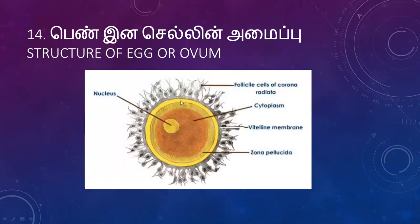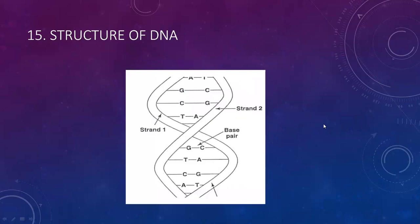Structure of egg or ovum: membranes include zona pellucida and zona — corona radiata is the external layer. The internal infrastructure is drawn and described.